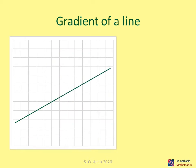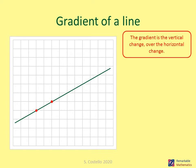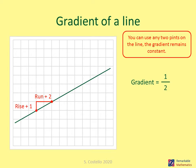Here we have a line section. To measure the gradient, we find two points on the line that cross exactly at the intersections of the grid. The gradient is the vertical change over the horizontal change. We have a rise of one and a run of two, giving us a gradient of rise over run: one over two. You can use any two points on the line — the gradient remains constant on a straight line.